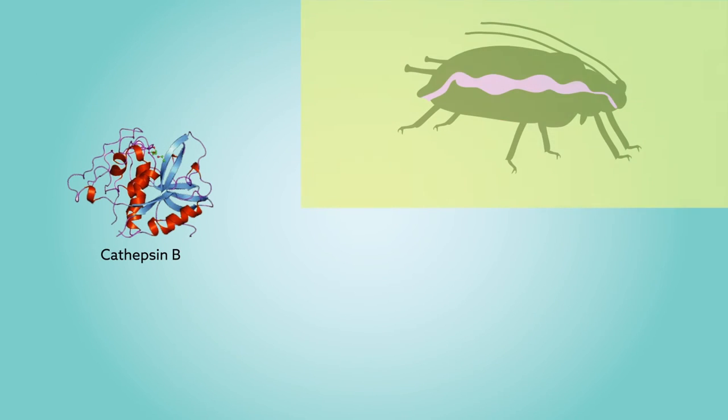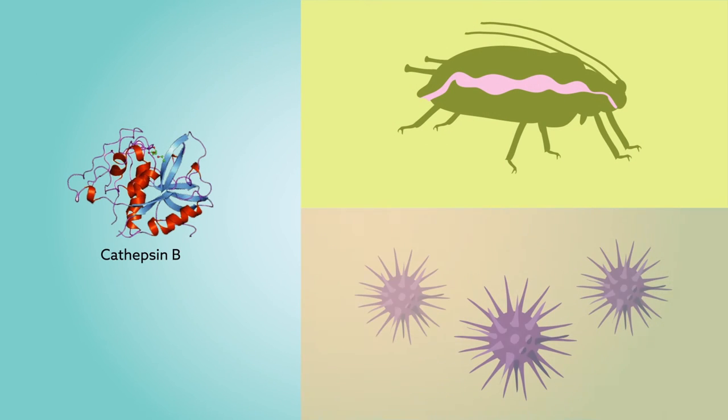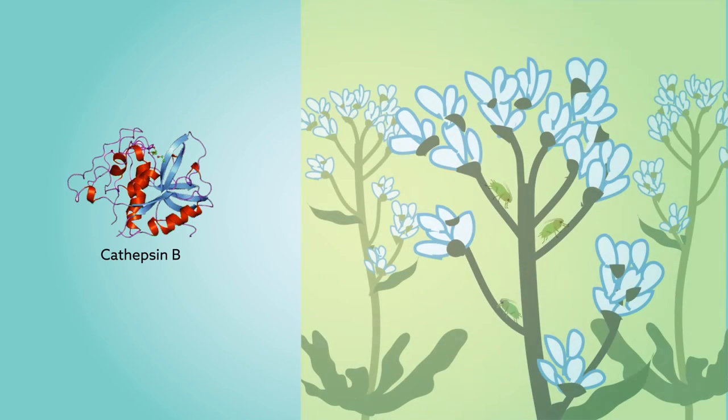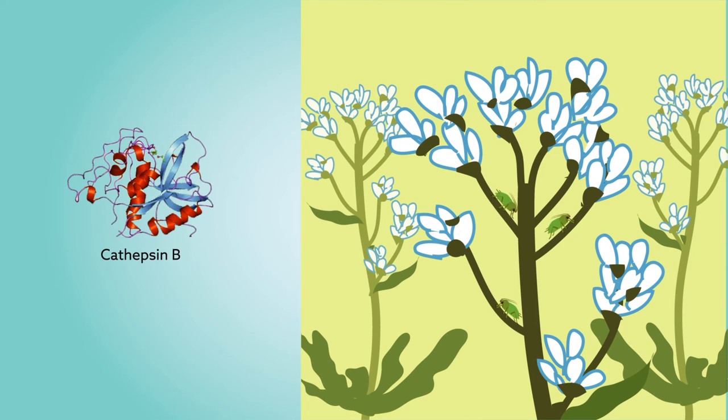Cathepsin B, thought to play a role in digestion but also possibly virulence, and a set of cuticle proteins. The cathepsins proved to be essential for life on the new plant.